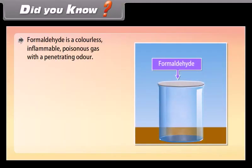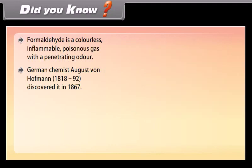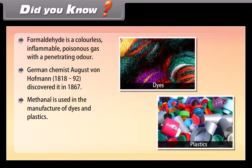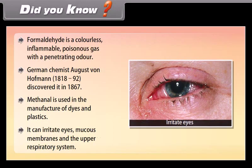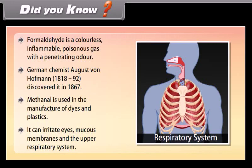Did you know? Formaldehyde is a colorless, inflammable, poisonous gas with a penetrating odor. American chemist August von Hofmann (1818–1892) discovered it in 1867. Methanal is used in the manufacture of dyes and plastics, and it can irritate the eyes, mucus membranes, and the upper respiratory system.